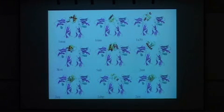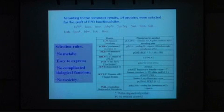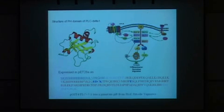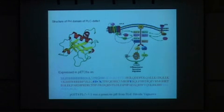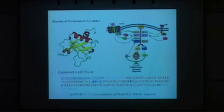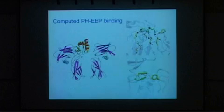To verify this experimentally, we chose one particular protein structure — the PH domain from phospholipase C. This phospholipase is intracellular and independent of the EPO pathway, so by using a domain from this protein, we expect no crosstalk — we can design orthogonal protein interaction pairs, which is very important in synthetic biology. This is the complete structure of the PH domain with the EPO receptor, showing the designed interface.